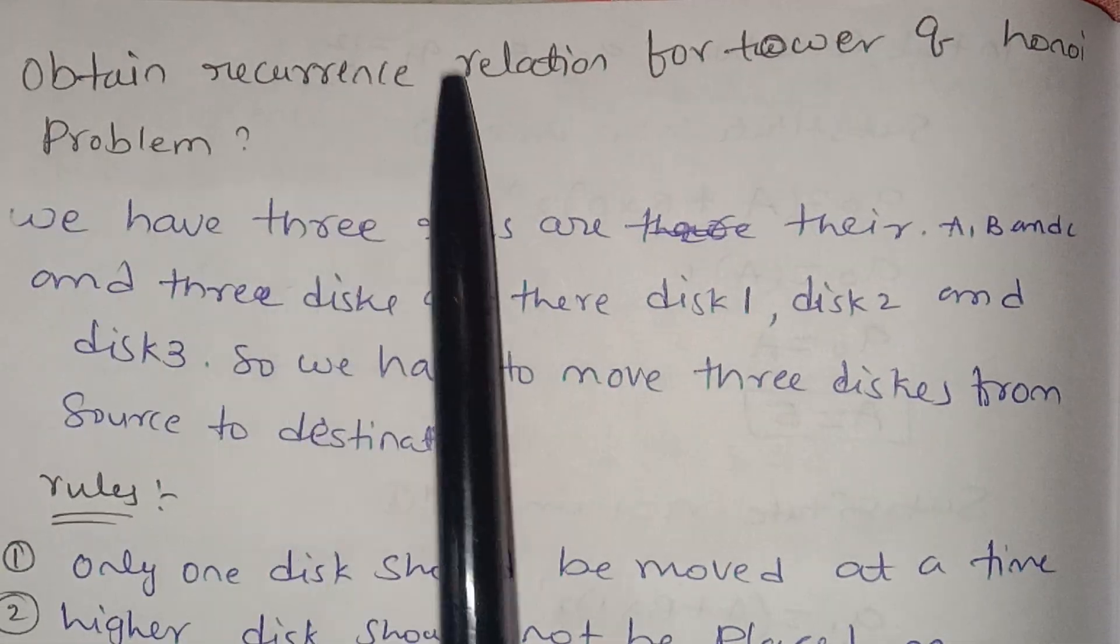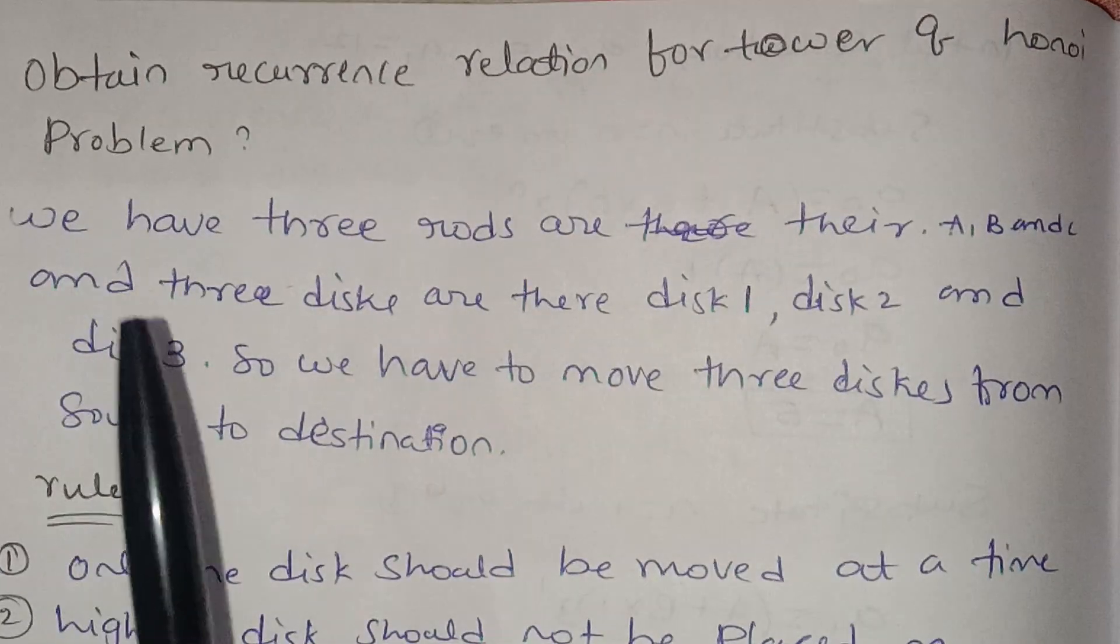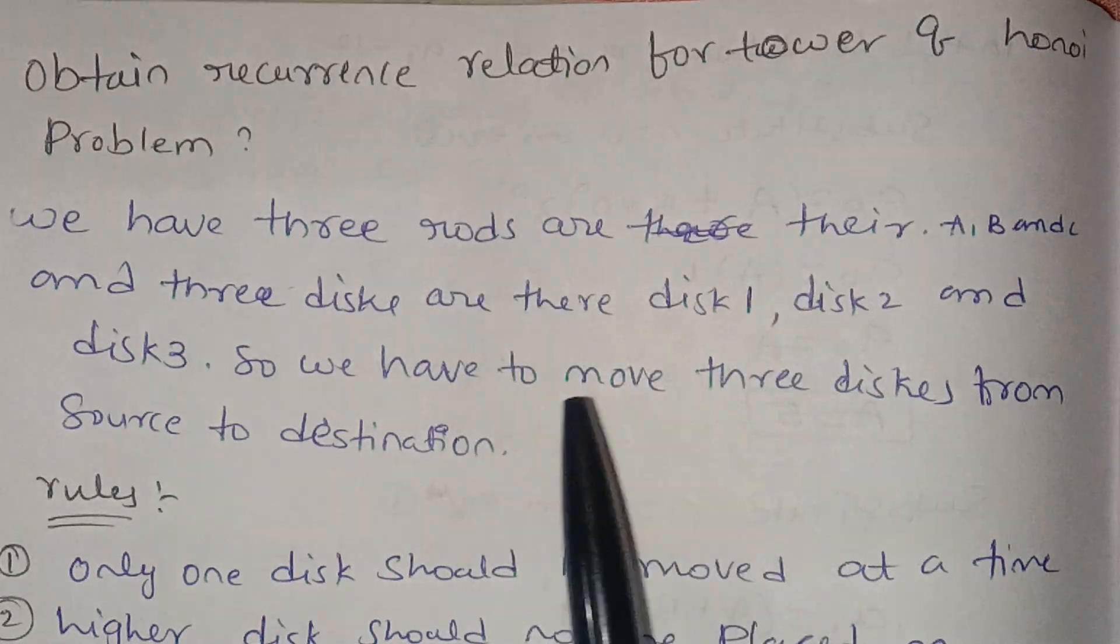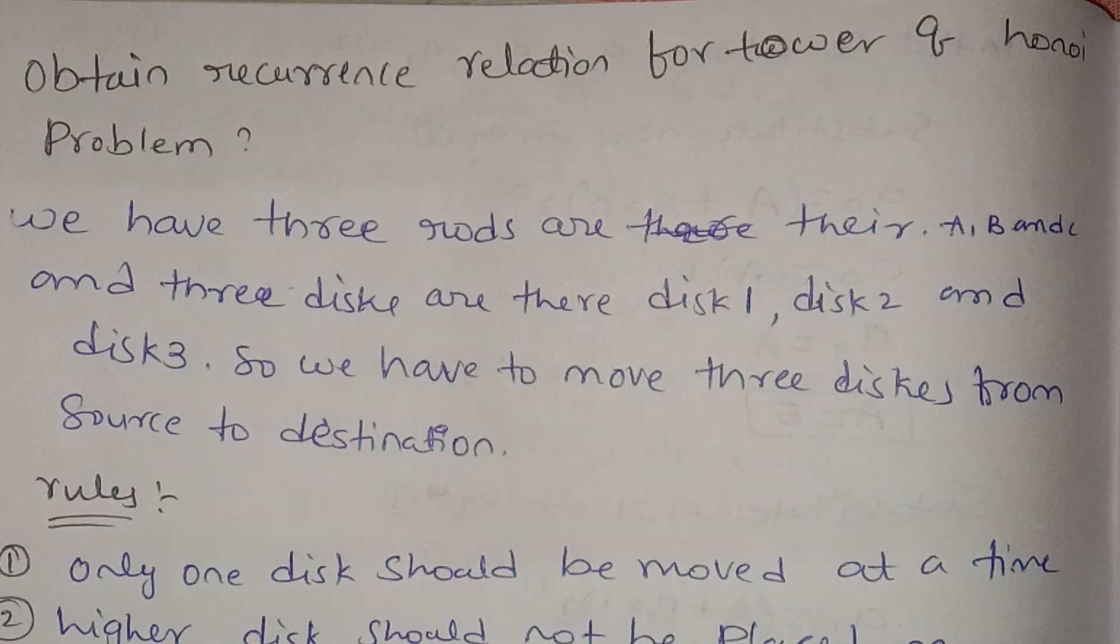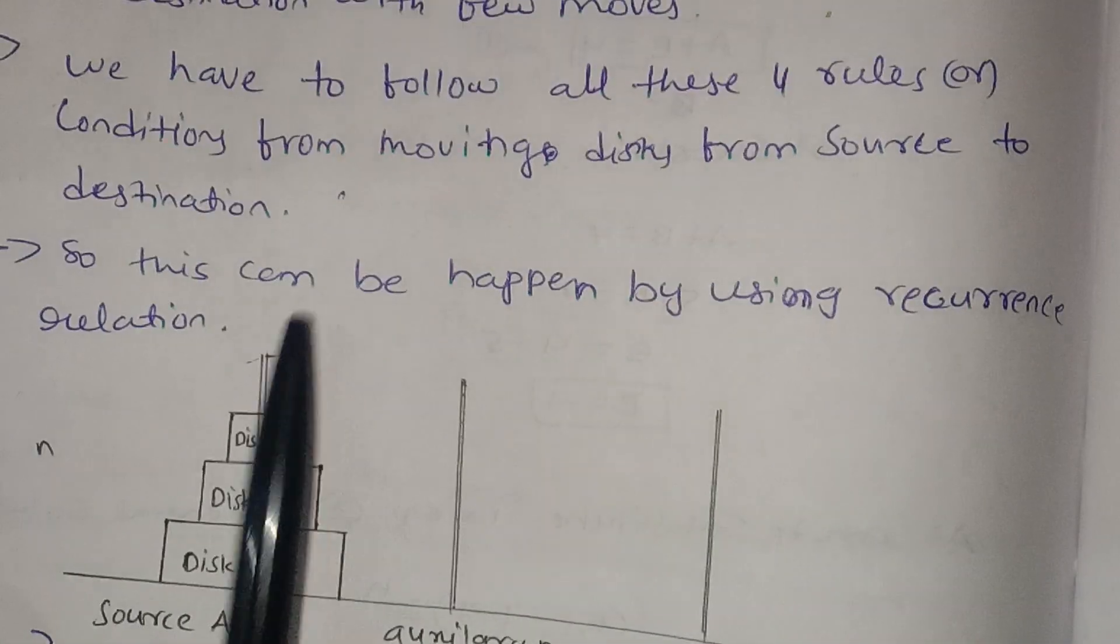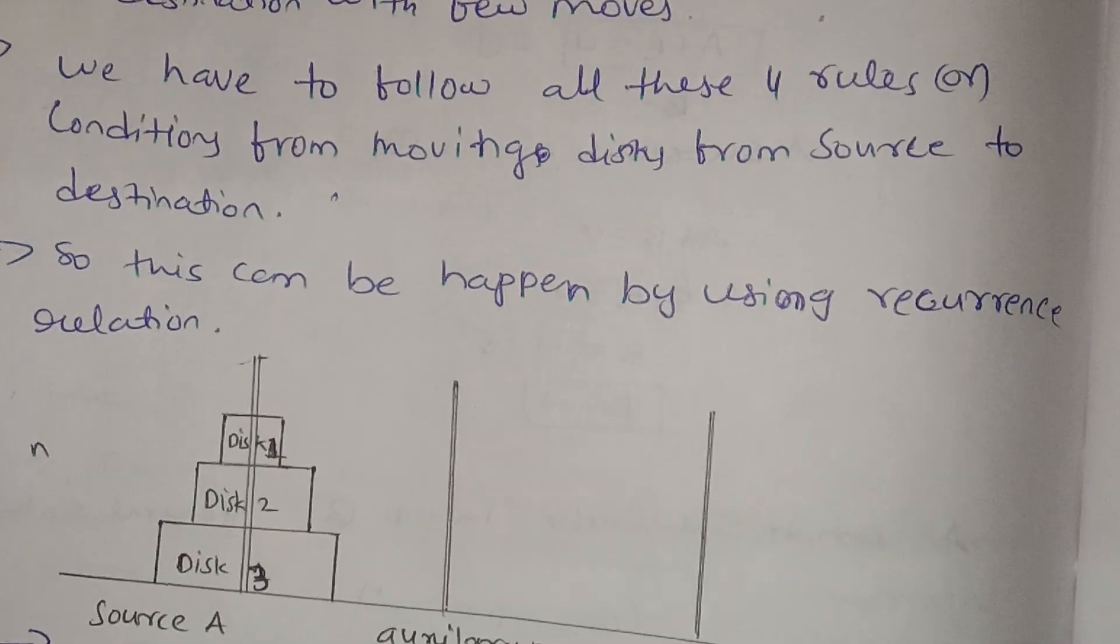So, obtain recurrence relation for the Tower of Hanoi problem. We have three rods, three towers. One, two, three. Three rods.